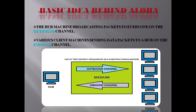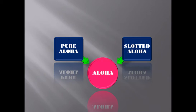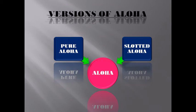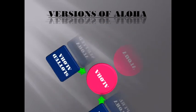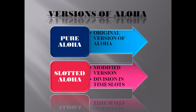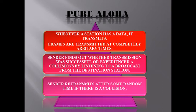Versions of ALOHA: there are two types — Pure ALOHA and Slotted ALOHA. Pure ALOHA is the original version of ALOHA. Slotted ALOHA is a modified version which divides time into slots.